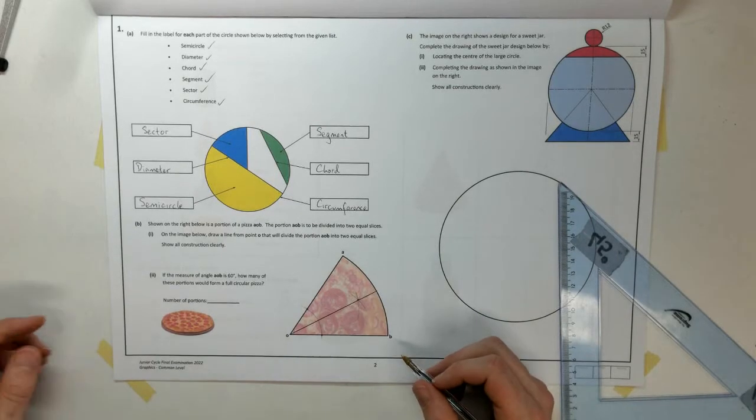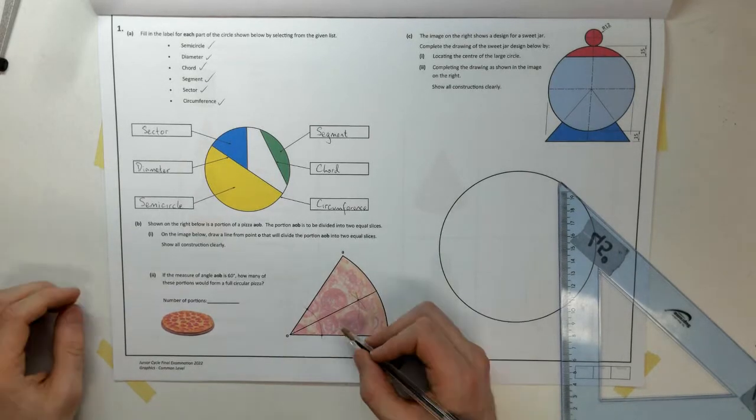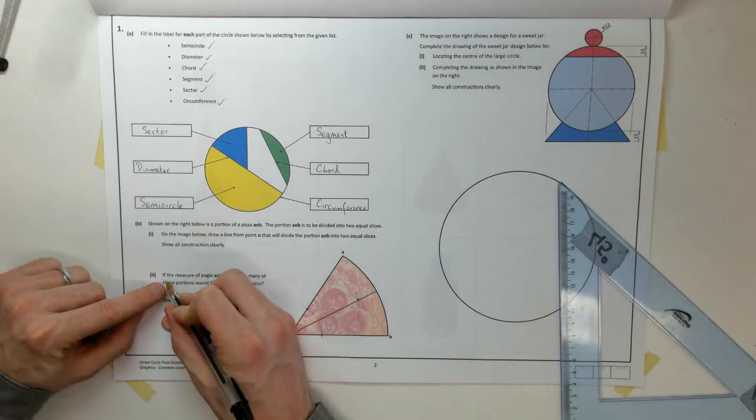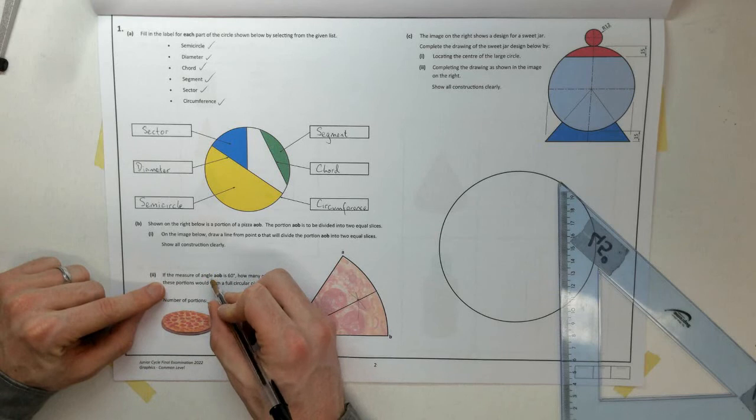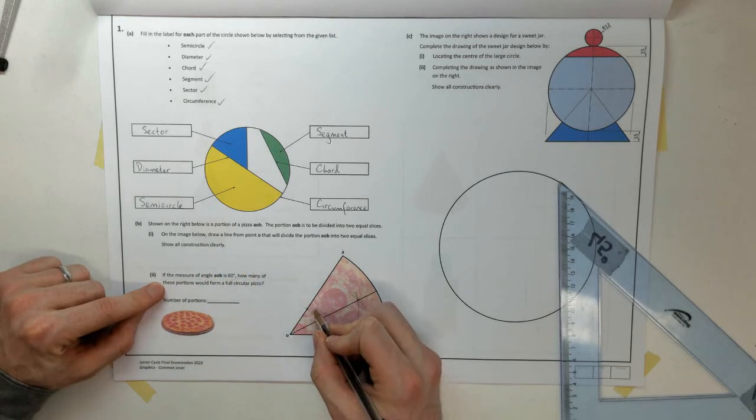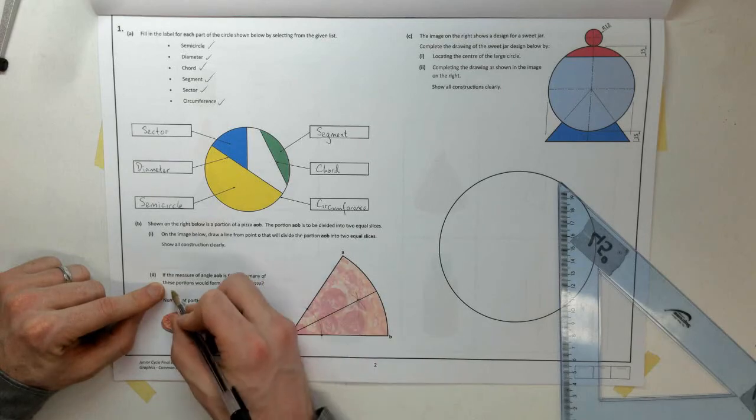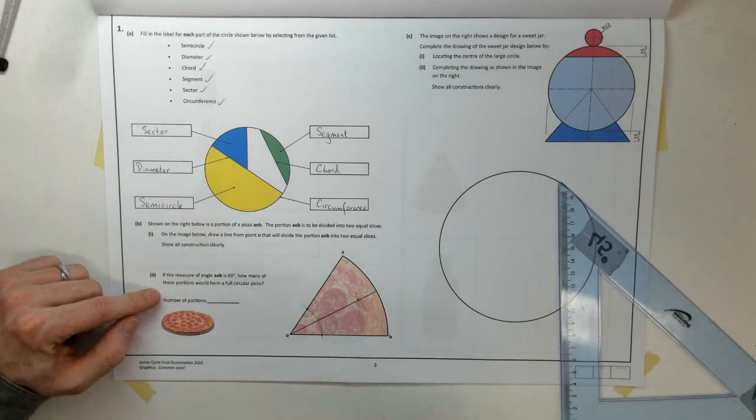If you wanted to, you could measure that angle with your protractor, but there's no need. So, part two, if the measure of angle AOB is 60, so this is 60 degrees total, how many of these portions would form full circular pizza?